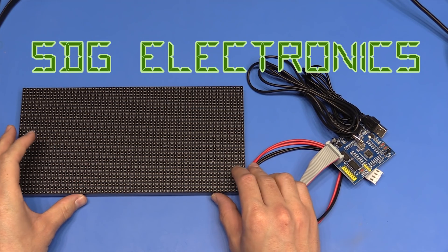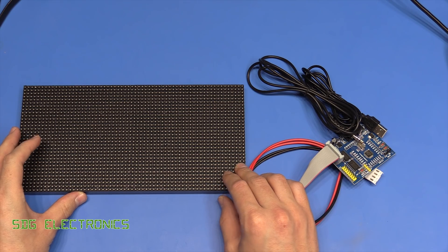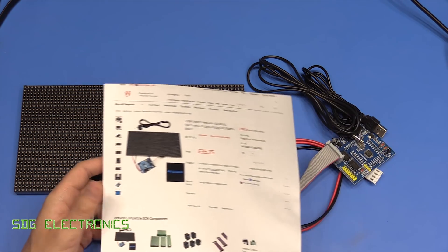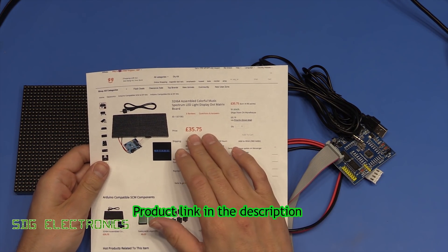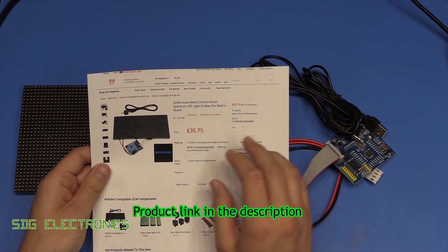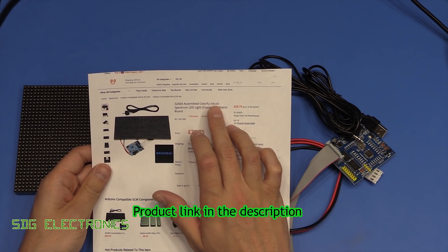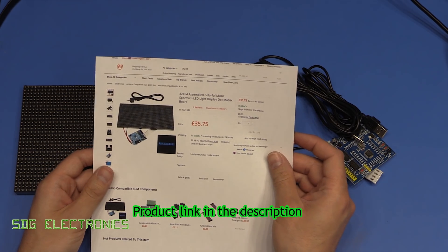Hi, in this video I thought we'd have a look at this LED matrix display. So this was provided to me free of charge by Banggood, it's currently retailing for £35 and it's described as a 32 by 64 colorful music LED display.